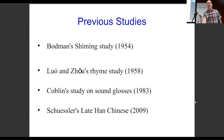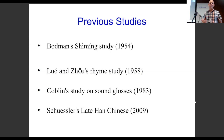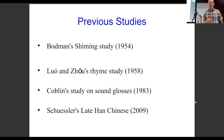In modern times, there was a Qing Dynasty scholar that did some work on the Han Dynasty. In modern times, we have Bodmin's Shimin study and Luo from Luo and Zhou. Luo actually suggested to Bodmin to do that study, probably because he anticipated they were going to study the finals while he had Bodmin study the initials. These studies are actually still quoted when people do Han Dynasty work today.